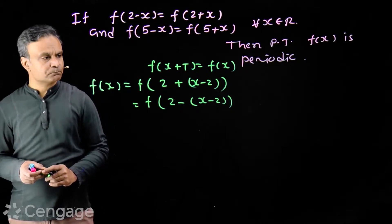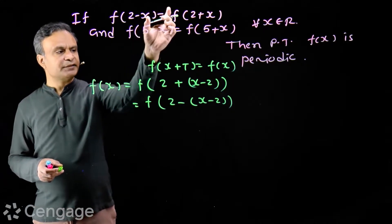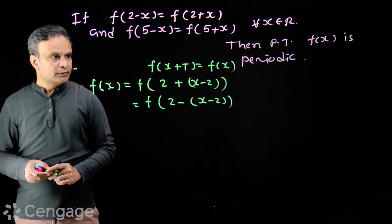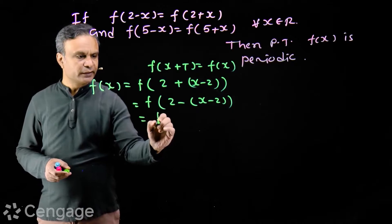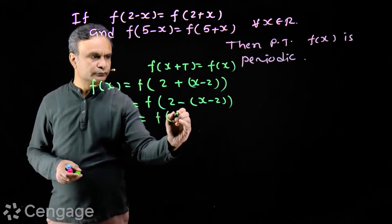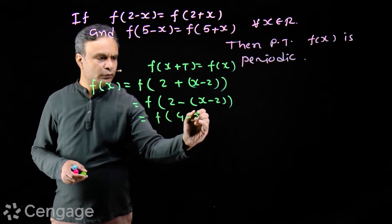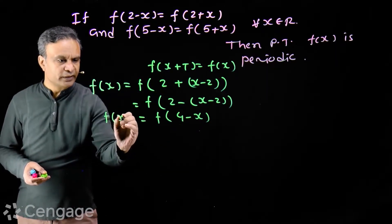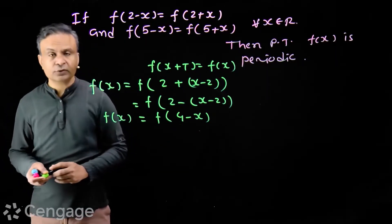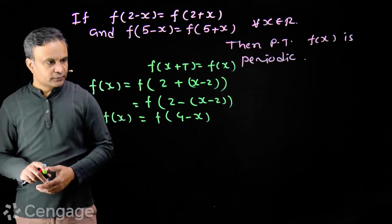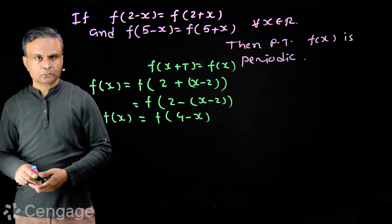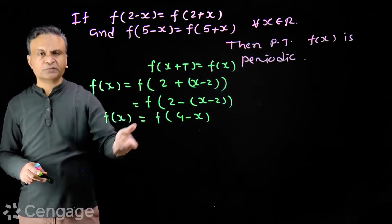In this replace x by x-2, we get this is equal to this. So from this we get f(x) = f(4-x). We can't say function f(x) is periodic.